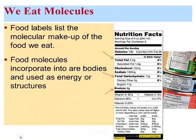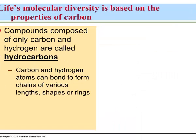Here we see a food label listing those different biological molecules that we eat. We incorporate those molecules into our bodies and then cells use them for energy and for structure. In future videos, I will describe each of those four biological groups — carbohydrates, lipids, proteins, and nucleic acids — but I want to focus on carbon making organic molecules first.